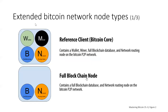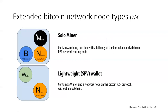Here's a look at some of these node types. The reference client Bitcoin Core has all four capabilities: wallet, miner, full blockchain, and routing node. A basic blockchain node without wallet or mining capabilities would just have full blockchain and the network. A solo miner would have miner, network, and full blockchain. A lightweight SPV wallet is just a wallet and the network routing node.